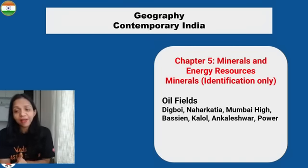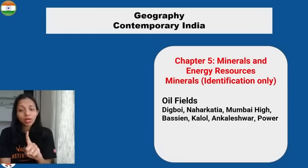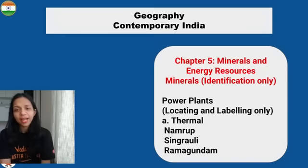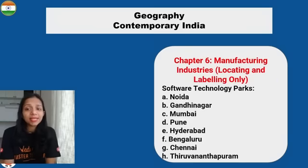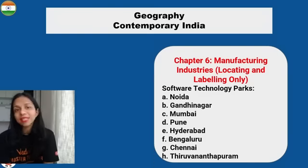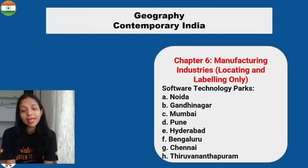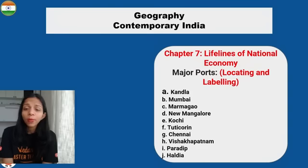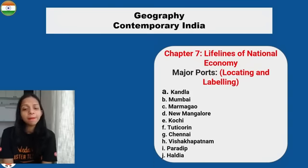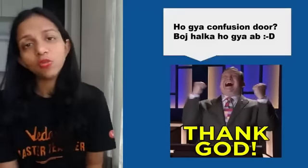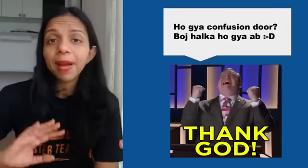For the map topics in Mineral and Energy Resources — Digboi, Kalol, Ankleshwar — make a table so even if you're not very good in geography you can associate a state with its resource. Also power plants and nuclear power plants. Manufacturing Industries map topics are very easy — major cities and software and technology parks. You will locate Noida, Gandhinagar, Mumbai, Pune, Hyderabad, Bangalore, Chennai, and Thiruvananthapuram. And major ports: Kandla, Mumbai, Marmagao, Goa, Mangalore, Kochi, Tuticorin, Chennai, Visakhapatnam, Paradeep, and Haldia.